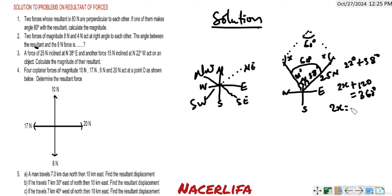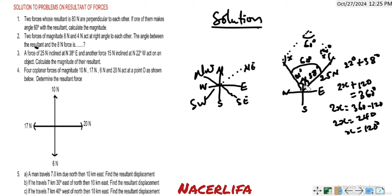So 2x = 360 minus 120 = 240, giving x = 120 degrees. Each of these angles is 120 degrees. The parallelogram law of vectors states that if two vectors are represented both in magnitude and direction by the adjacent sides of a parallelogram, the diagonal drawn from the point of intersection represents the resultant vector.